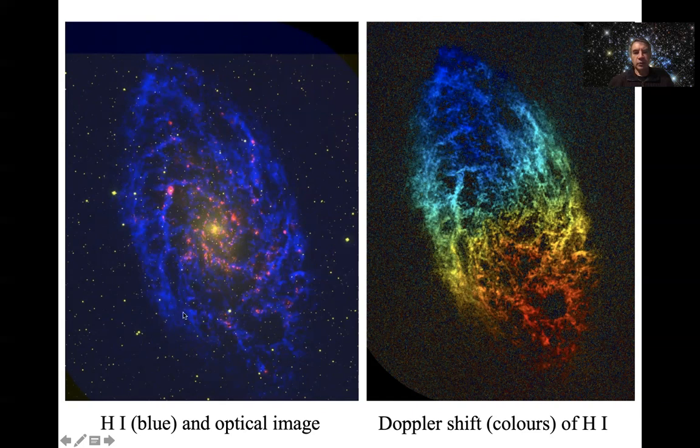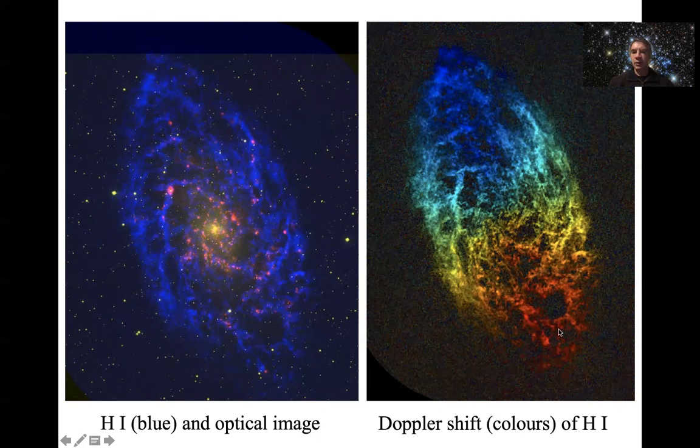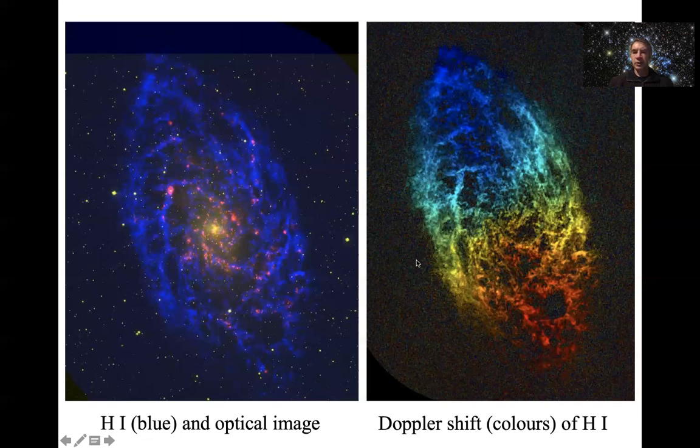On the right in the colors we've got the same intensity map but this time colored with whether it's red shifted - on this side the hydrogen gas is moving away from us, and on this side of the galaxy the gas is moving towards us, and you can see the axis of rotation.